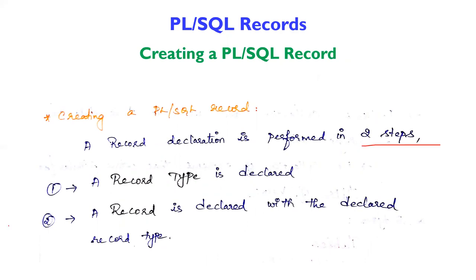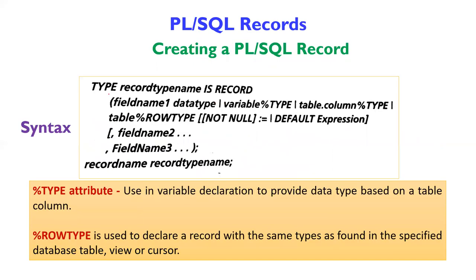The first step is to declare the record type. Just as you declare a data type before creating a variable, here you declare a user-defined record type. Then in the second step, you create a record variable declared with that record type. The syntax uses the TYPE keyword followed by the record type name, then the IS RECORD keyword, and you define the fields inside it.